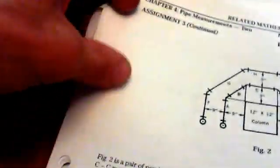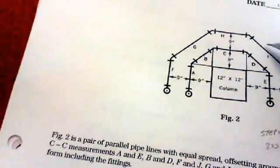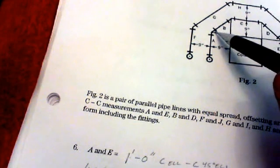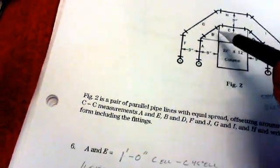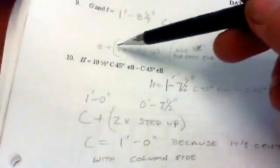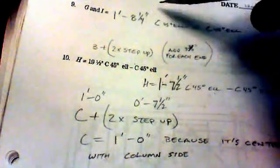For G and I, here and here. For those, it's simply a matter of taking B or D and adding the step up times two. Because each fitting is going to need to be pushed out that much. When you do that, you end up with B plus two times the step up. And that's what we end up with. One foot eight and one quarter inch.